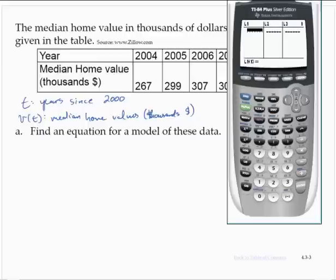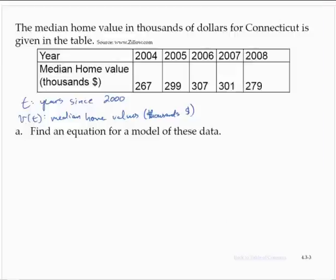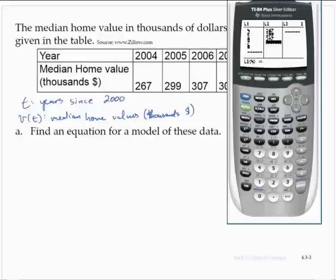Alright, so we would have 4, 5, 6, 7, and 8. Then 267, 299, 307, 301, and 279.